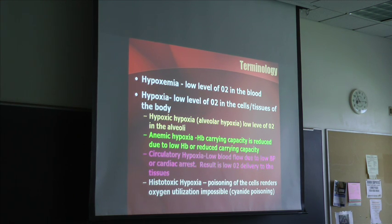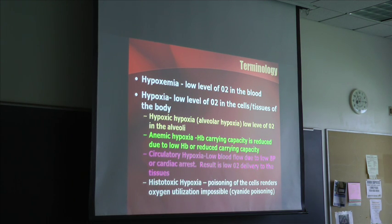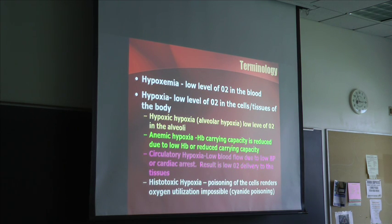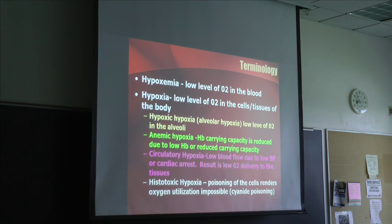The last one, histotoxic hypoxia, is poisoning of the cells — it renders oxygen utilization impossible. The example given is cyanide poisoning. Cyanide is used for pest control, but if a human ingests it, the cells cannot utilize oxygen. It poisons the cell and they can't take in oxygen. So with histotoxic hypoxia, the cells are unable to utilize oxygen.